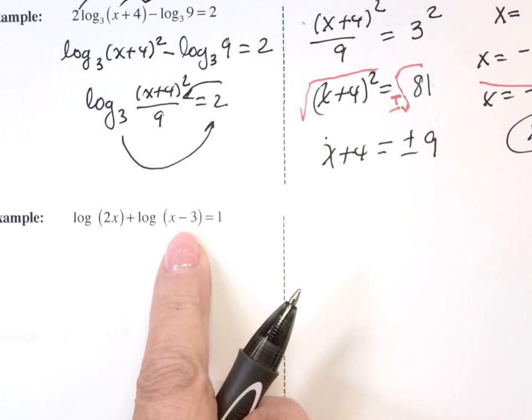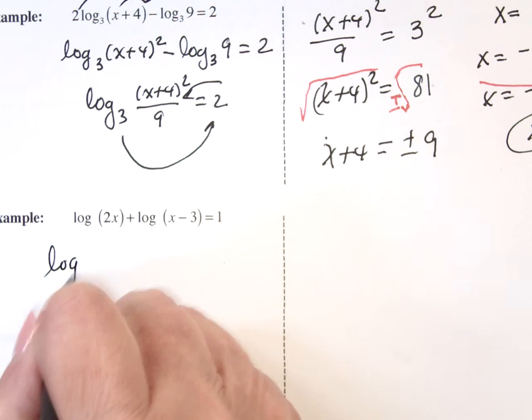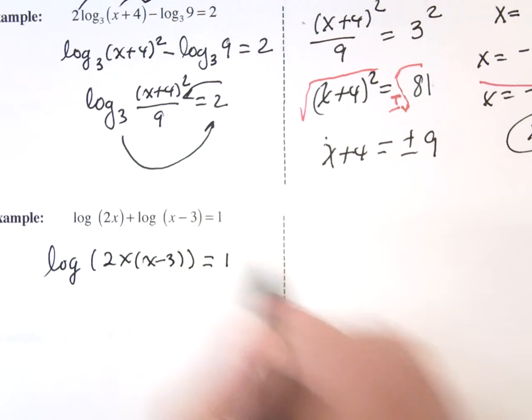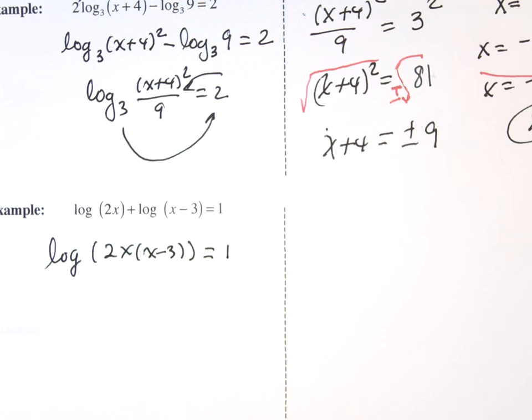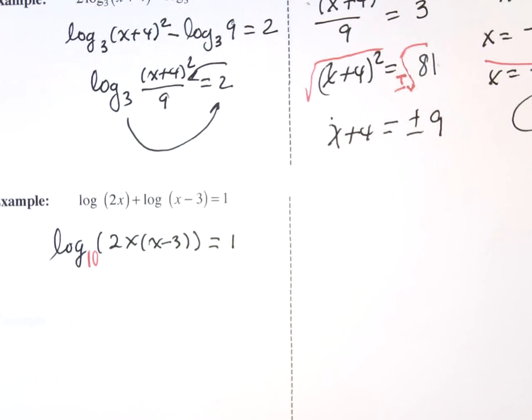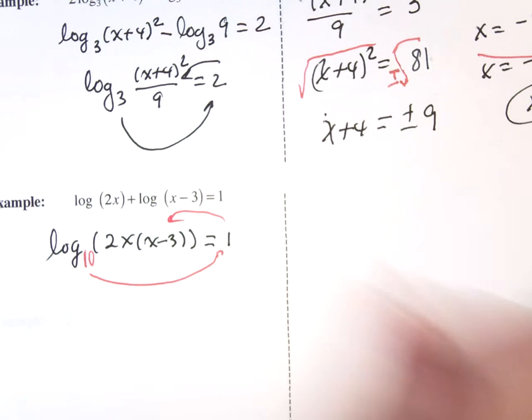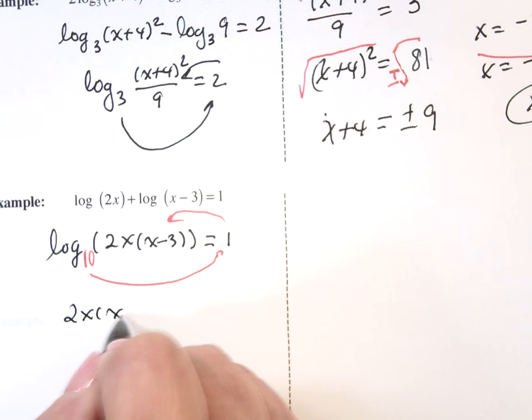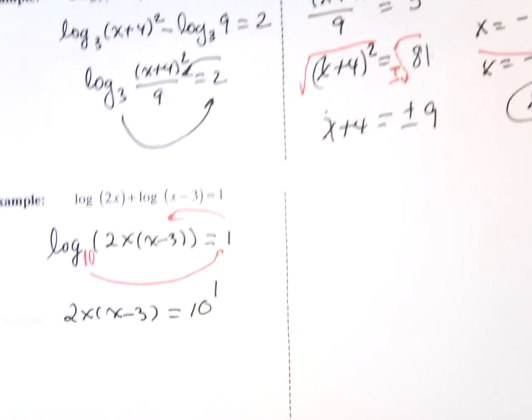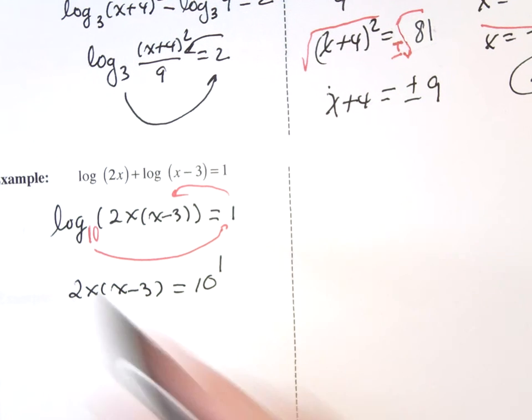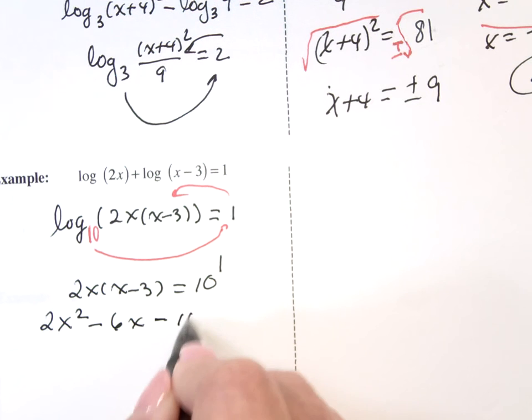So here's a product. Product turns into a sum. Log of 2x times (x-3) equals 1. What's the base on this log? 10. Put it in. Because you're going to need to rewrite this as 2x times (x-3) equals 10 to the 1 power. 2x² - 6x - 10 equals 0.